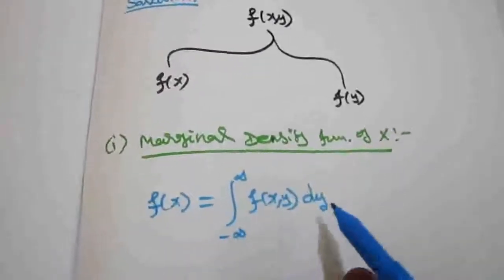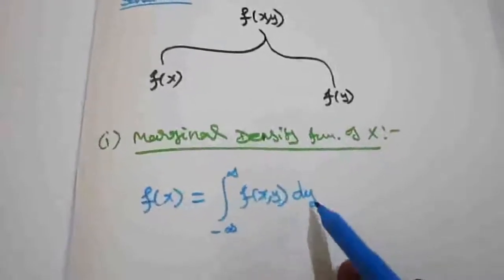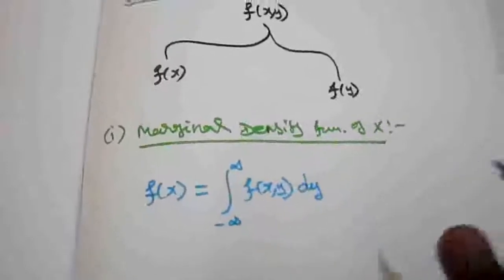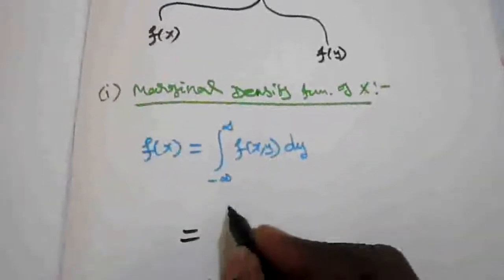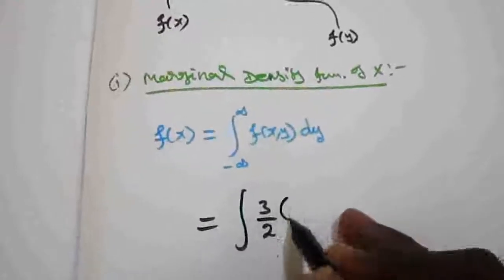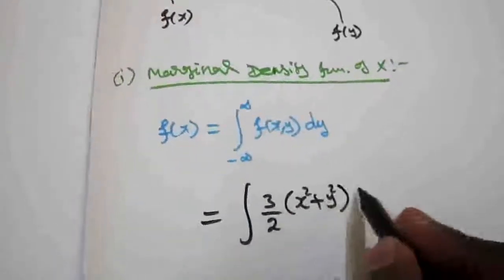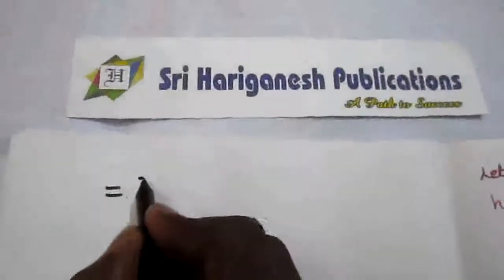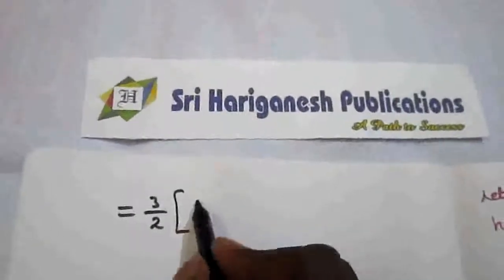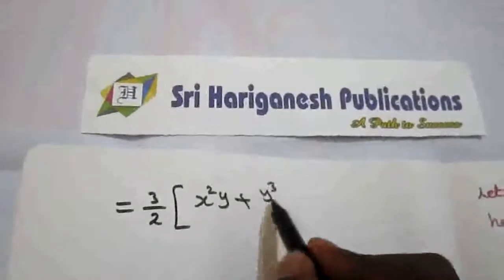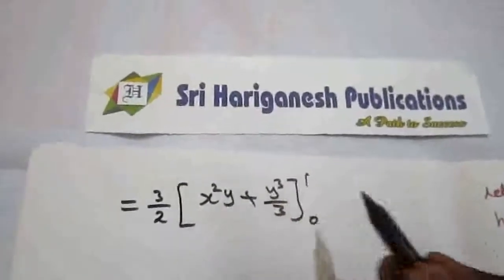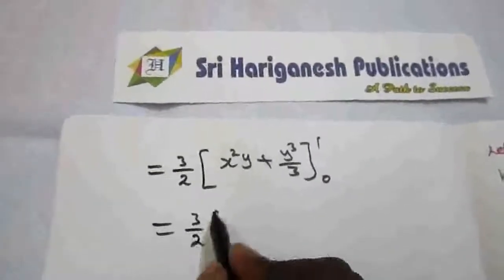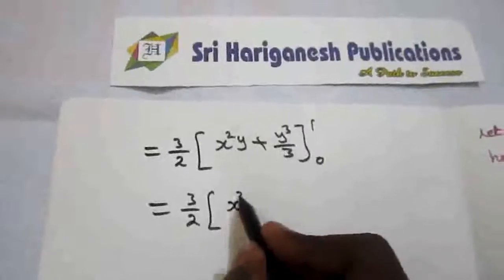To find f(x), integrate f(x, y) with respect to y and apply the limit for y — y will be eliminated and we get a function in terms of x. So: integral of (3/2)(x² + y²) dy, with limit for y from 0 to 1. Taking 3/2 outside and integrating: x²y + y³/3, evaluated from 0 to 1 gives (3/2)(x² + 1/3).